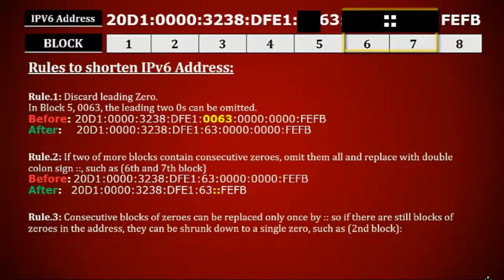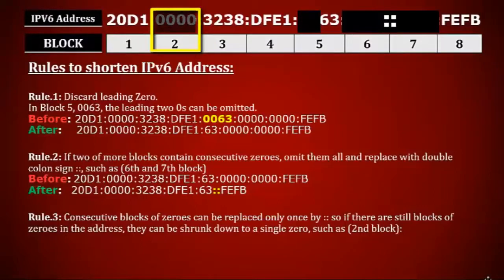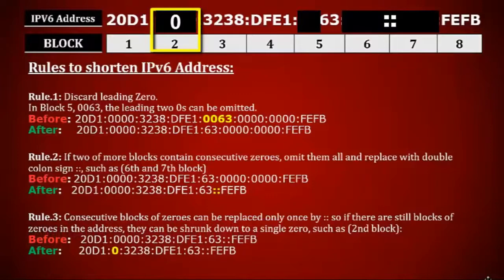Rule number three is: consecutive blocks of zeros can be replaced only once by double colon. So if there are still blocks which contain only zero in the address, they can be shrunk down to a single zero. Which means if there is still a block containing only zeros, it can be replaced with a single zero. For example, you can see in block two it contains only zeros and it can be replaced with a single zero. I have omitted the four zeros and replaced with a single zero at block two.